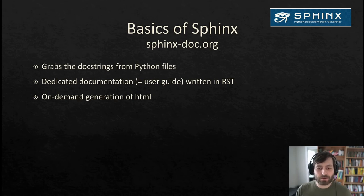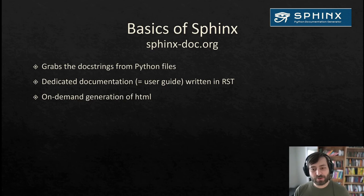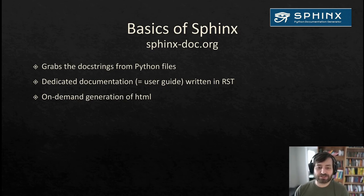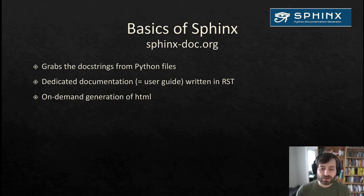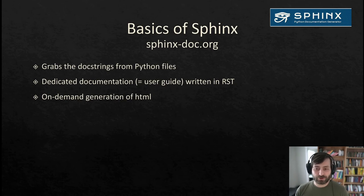So if you want to modify part of the documentation that's part of the docstring, you have to do this in the source code itself. Everything that will be rendered in the API documentation is written in the source code itself. If you want to modify the user guide, this will be written in RST inside the doc folder. The docstring has a particular format called the NumPy doc format, and we have several other conventions as well. You can find all of these in the contributor guide.